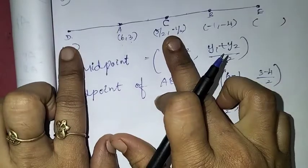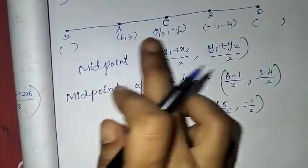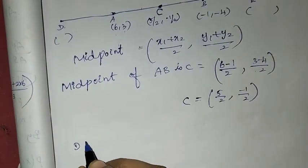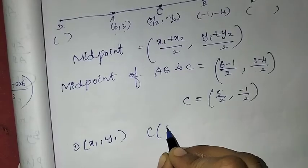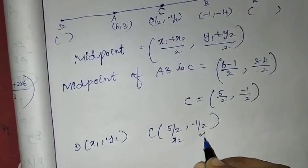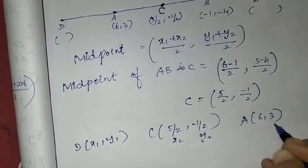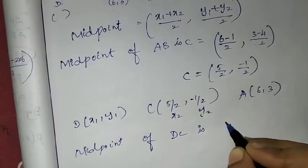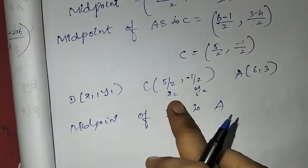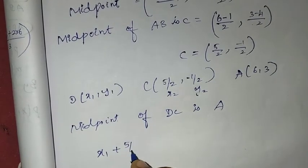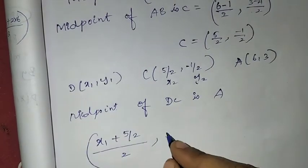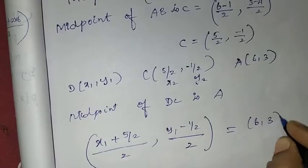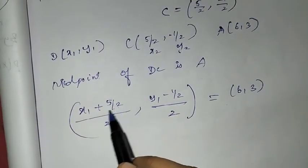Now we will use this midpoint formula again. The midpoint C is (5/2, -1/2). We say the midpoint of DC is A(6,3). So with D as (x1, y1) and C as (5/2, -1/2) as (x2, y2), the midpoint formula gives: (x1 + 5/2)/2 = 6 and (y1 + (-1/2))/2 = 3.